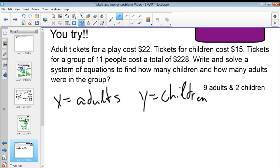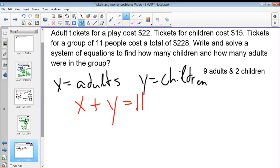Tickets for a group of 11 people cost $228. So that means I have a total of 11 people. So the amount of adults plus the amount of children, which is Y, has to be equal to 11. Because X is adults. So adults plus children has to be equal to 11. Adults' tickets cost $22. So that would be 22X plus 15Y because that's how much a child's ticket costs. And we are told that the total they made there was $228.